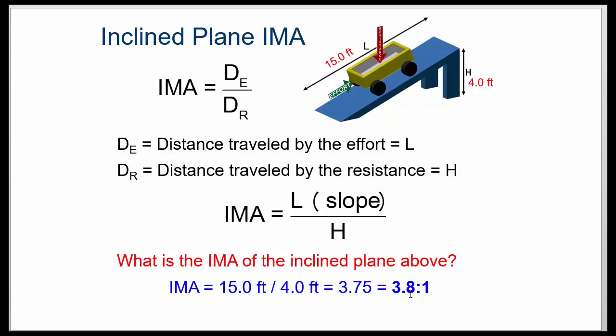If you round up, it ends up to be 3.8 to 1 is the ideal mechanical advantage. And again, there are distances that we're working with. We just changed it to the length and the height, the length being the slope.